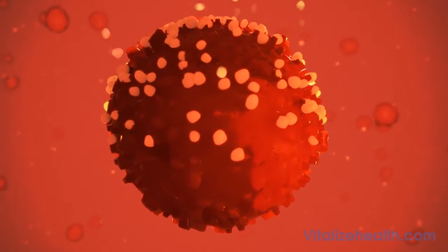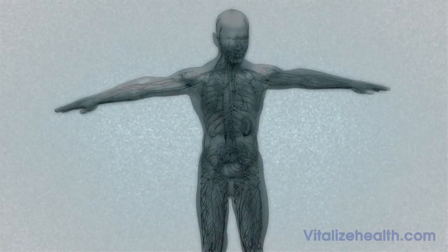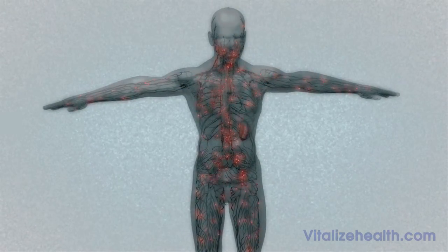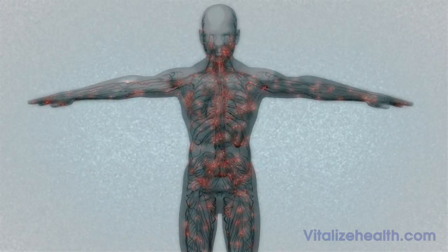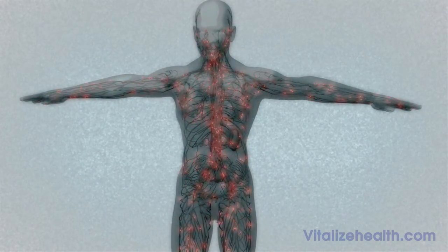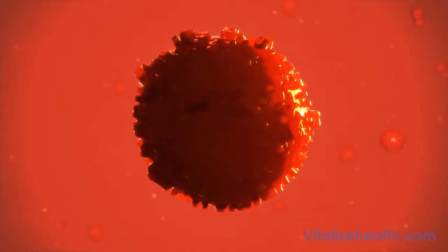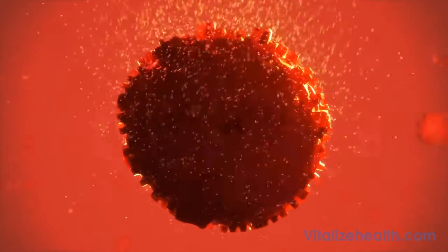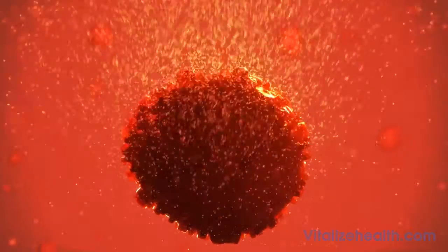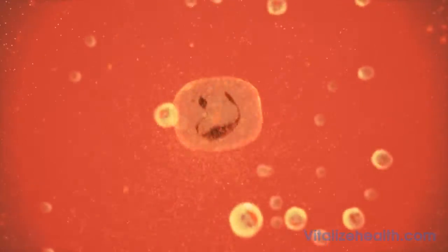The macrophages then transport the beta-glucan throughout the body to immune organs such as the thymus, liver, lymph nodes and spleen via the lymphatic system. While in the immune organs, the macrophages digest the beta-glucan into smaller fragments and release these over a period of several days.